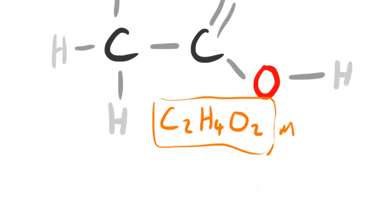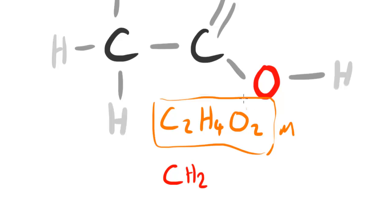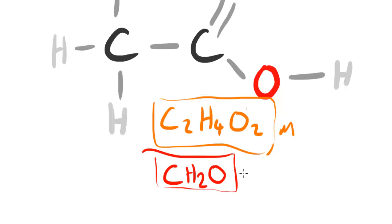Using the molecular formula C2H4O2, we can find the empirical formula — the simplest whole number ratio. The highest common factor is 2, so we divide through: 2 divided by 2 is 1 (we don't write the 1), 4 divided by 2 is 2, and 2 divided by 2 is 1. So the empirical formula is CH2O.